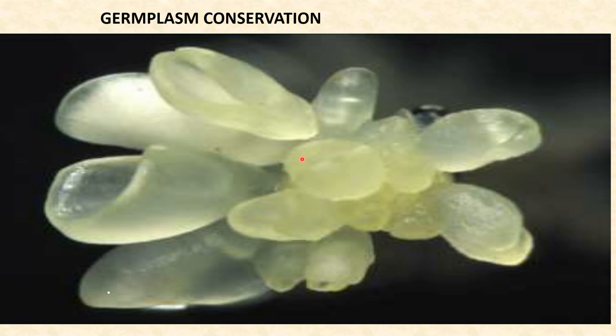Next is embryo culture. Using embryo cultures, seed dormancy can be overcome. Embryo rescue, which can circumvent post-zygotic barriers to raise rare hybrids by rescuing embryos from incompatible crosses, is the most popular application. The production of embryos from somatic or non-germ cells usually involves a callus intermediate stage, which can result in variation among seedlings.